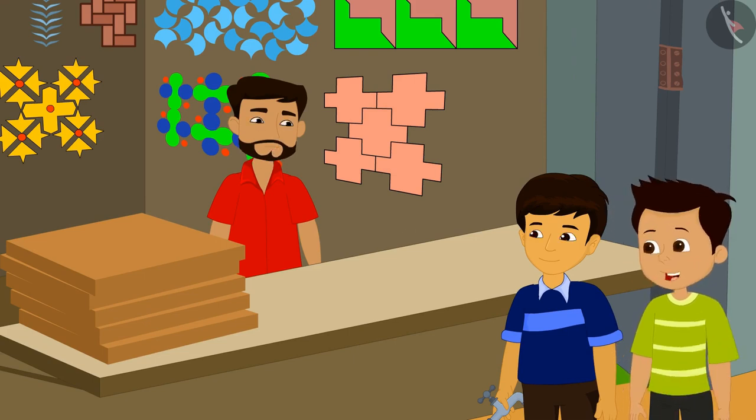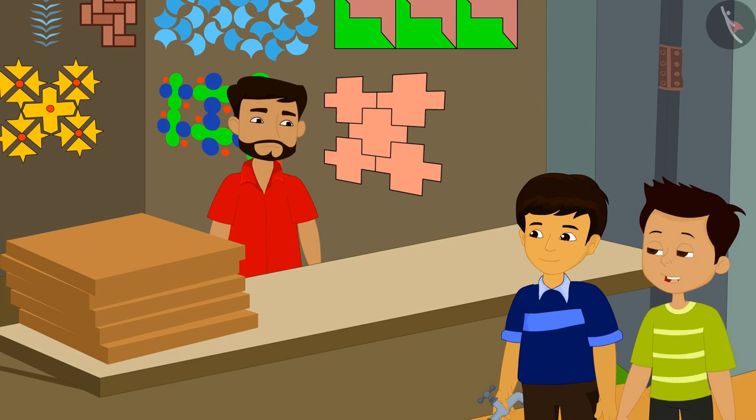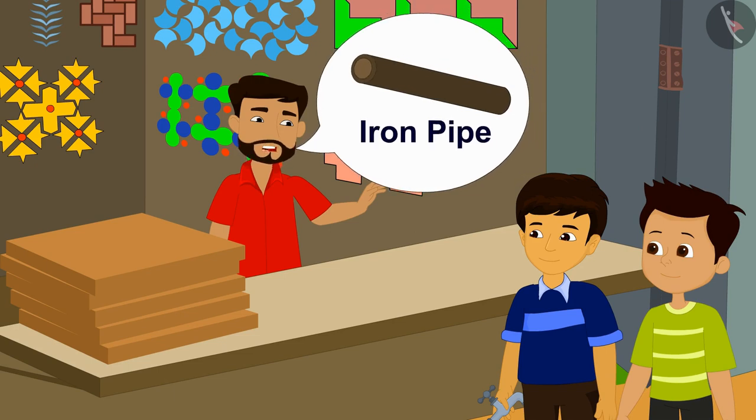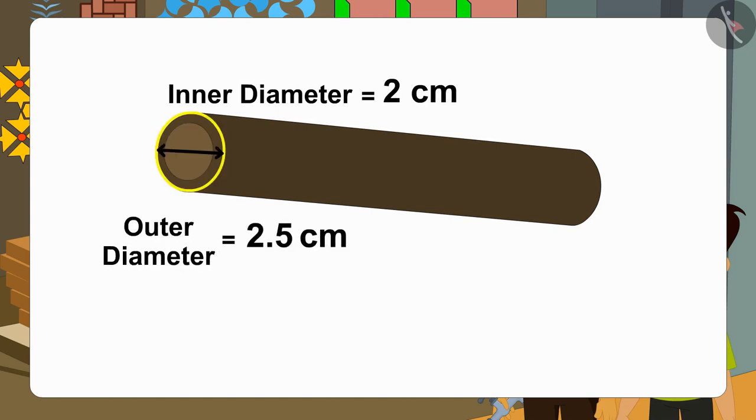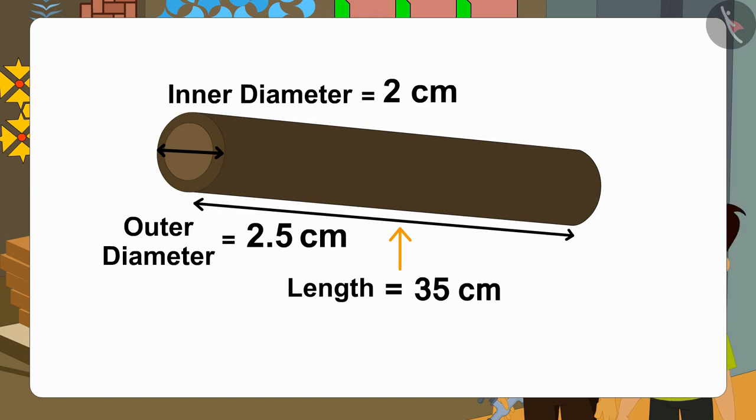Uncle, you seem a bit upset. What is the matter? Actually, I want to make an iron pipe. I know its inner diameter is 2 centimeters, outer diameter 2.5 centimeters, and length 35 centimeters. And I also know that the mass of one cubic centimeter of iron is equal to 7 grams, but...